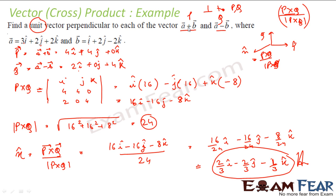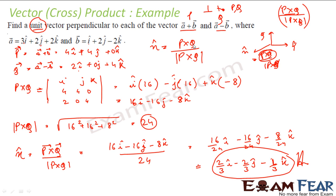So if you have to find any vector that is perpendicular to two vectors, you do the cross product of those two vectors. For example, to find a vector perpendicular to P and Q, compute P cross Q. To get a unit vector perpendicular to P and Q, divide P cross Q by its magnitude.